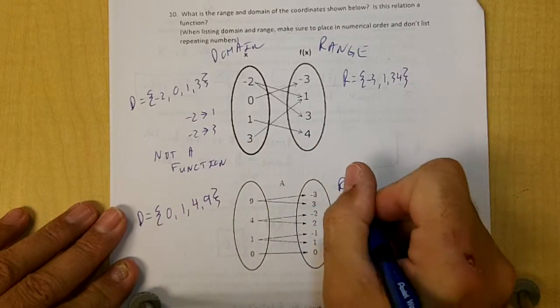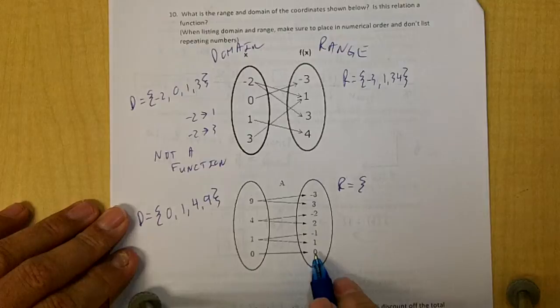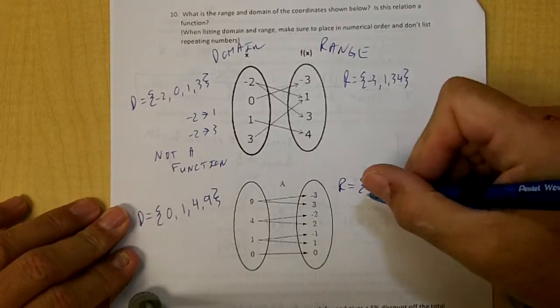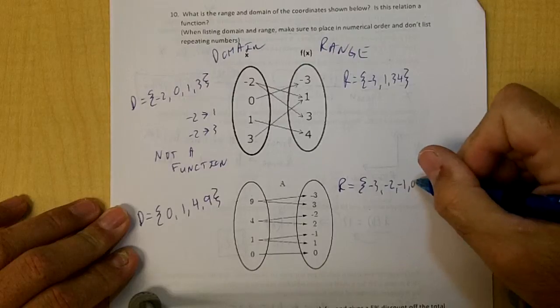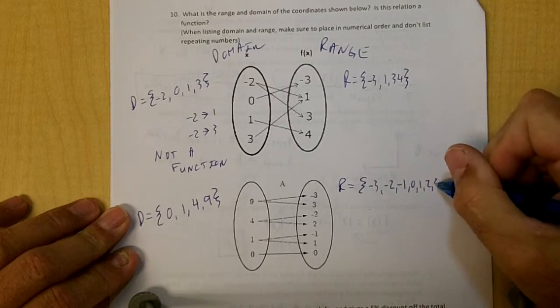And our range would equal, put them in order, negative 3, negative 2, negative 1, 0, 1, 2, and 3.